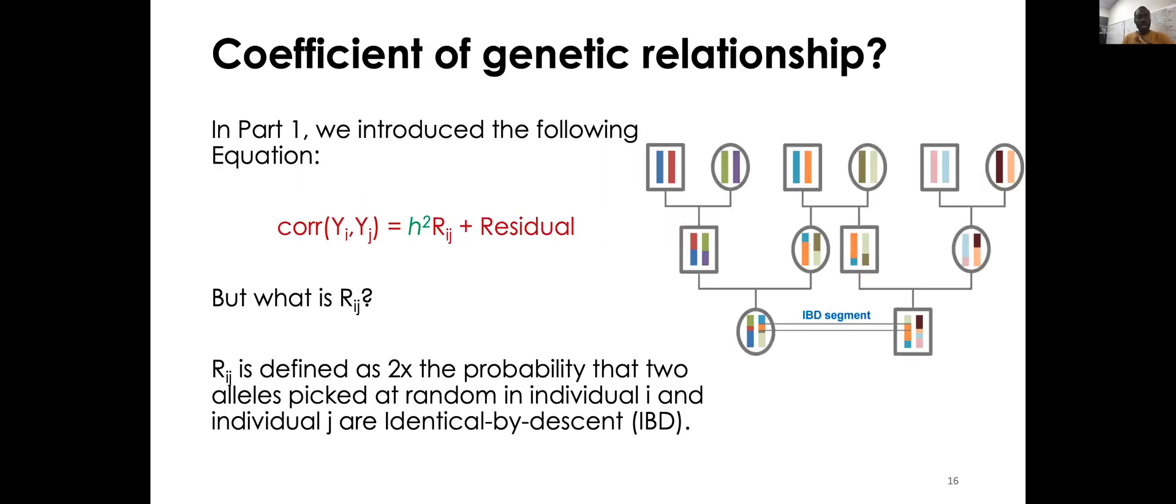So remember that in the first part, I introduced the following equation that relates the correlation between relatives on the left-hand side of that equation to the heritability h squared through that coefficient of genetic relationship R_ij. And so in part one, I haven't defined properly what is R_ij in here, I'd like to do that.